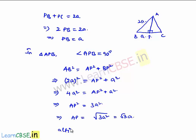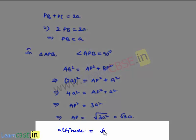So altitude is equal to root 3 by 2 times 2a, which is nothing but root 3 by 2 times the side.